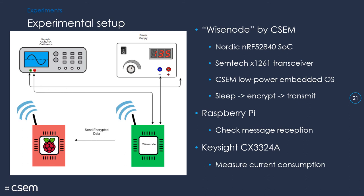In our experiment, we used a wireless sensor node platform developed at CSEM, which is really optimized for low power consumption. So both the microcontroller and the transceiver are selected to consume as little as possible. The node was running a low power operating system by CSEM and the application was super simple. The device is sleeping, it wakes up, it encrypts some fake data, transmits them and goes back to sleep. And then we use the Raspberry Pi to verify we're really sending and encrypting something and we measure the power consumption with an oscilloscope.